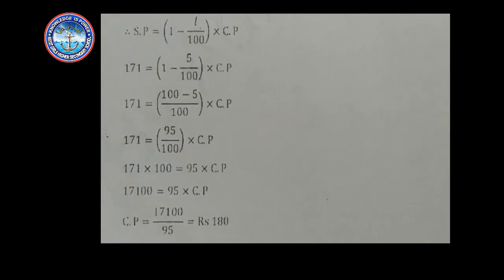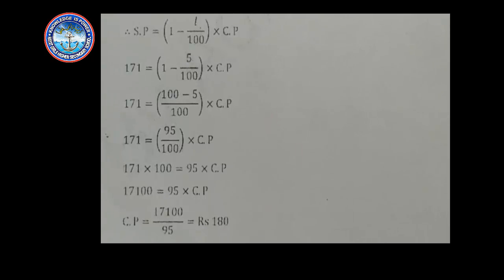The selling price is equal to (1 − loss/100) × cost price. Since there is a loss, we use the minus sign. Putting in the values: 171 = (1 − 5/100) × cost price. Taking LCM inside the bracket: 171 = (100 − 5)/100 × cost price = 95/100 × cost price.